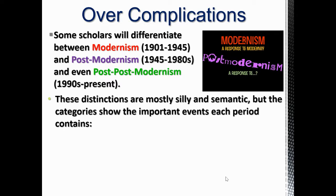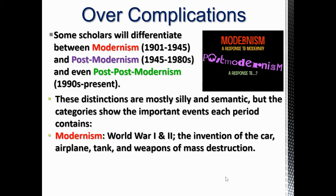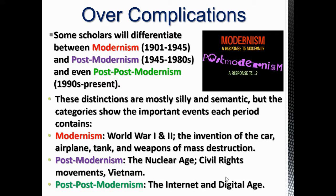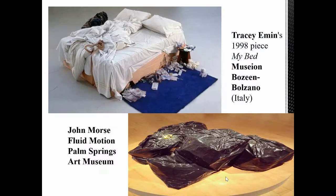These distinctions are important for historical context, which is why cultural studies has better terms. Modernism covers World War I and II, the invention of the car, airplane, tank, weapons of mass destruction, and the nuclear age. Postmodernism covers the civil rights movement and Vietnam. And post-postmodernism? Cultural studies and historians call it the digital age — that's what's still guiding art, culture, and society. These terms matter because they distinguish how art has changed in the 20th and 21st centuries.